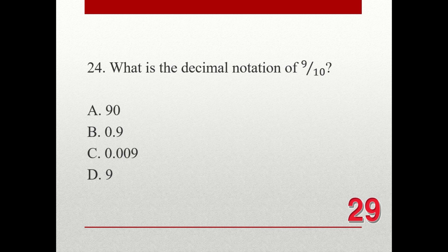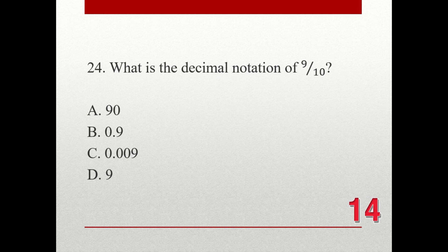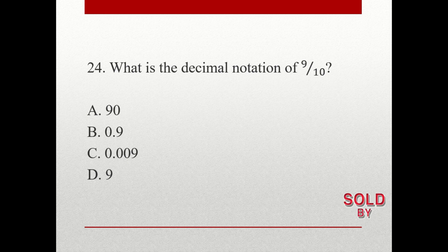Question number 24. What is the decimal notation of 9 over 10? A. 90. B. 0.9. C. 0.009. D. 9. The correct answer is B. 0.9.